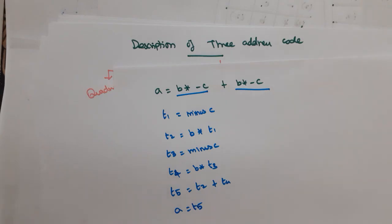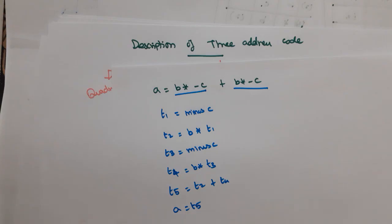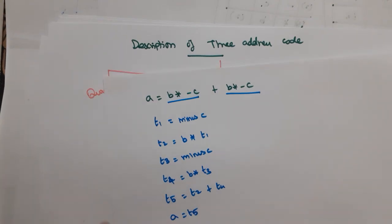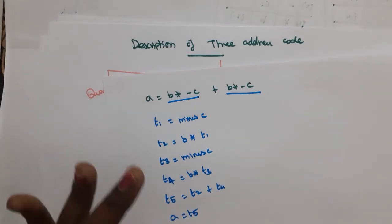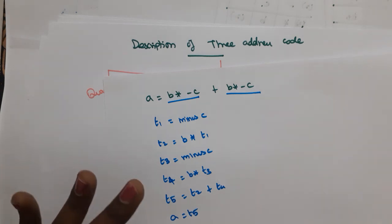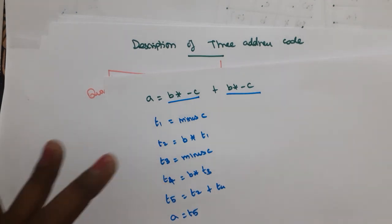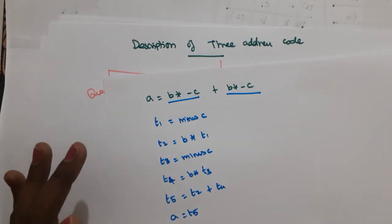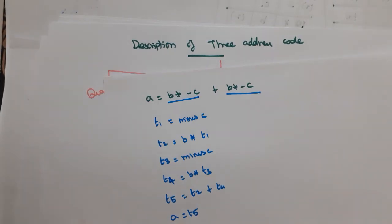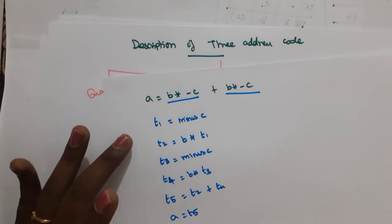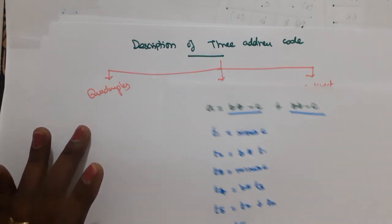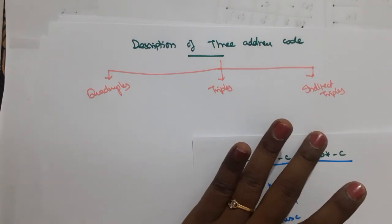So this is how we write an intermediate code, a three address code. This is a phase where we are not bothered about code optimization. We directly take a code, take the parse tree and convert that into a three address code structure. Now, how are we going to implement that into a data structure? That is what the three ways cover — quadruple, triples, and indirect triples.